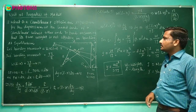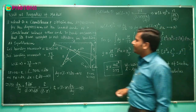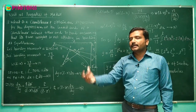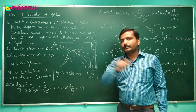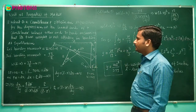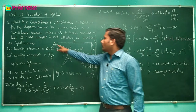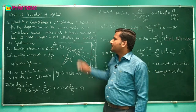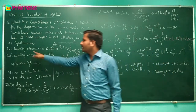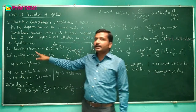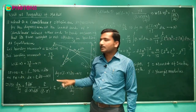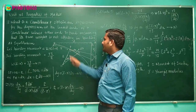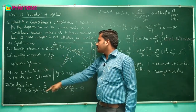To recap: a cantilever is a beam fixed at one end and loaded at the other, causing bending. We wrote the expression for external and internal bending moments, and at equilibrium, set them equal. We considered a point P on the bent beam, treating the bend as a curvature with radius R, and defined two nearby points P and Q forming an arc dx with angle dθ.